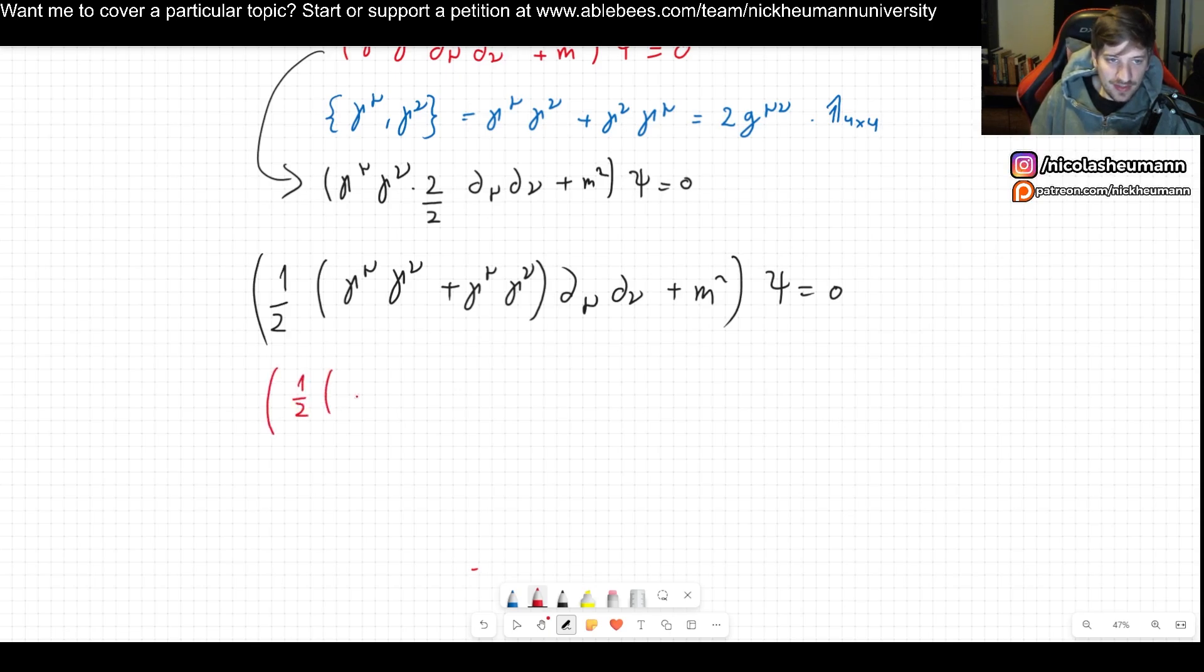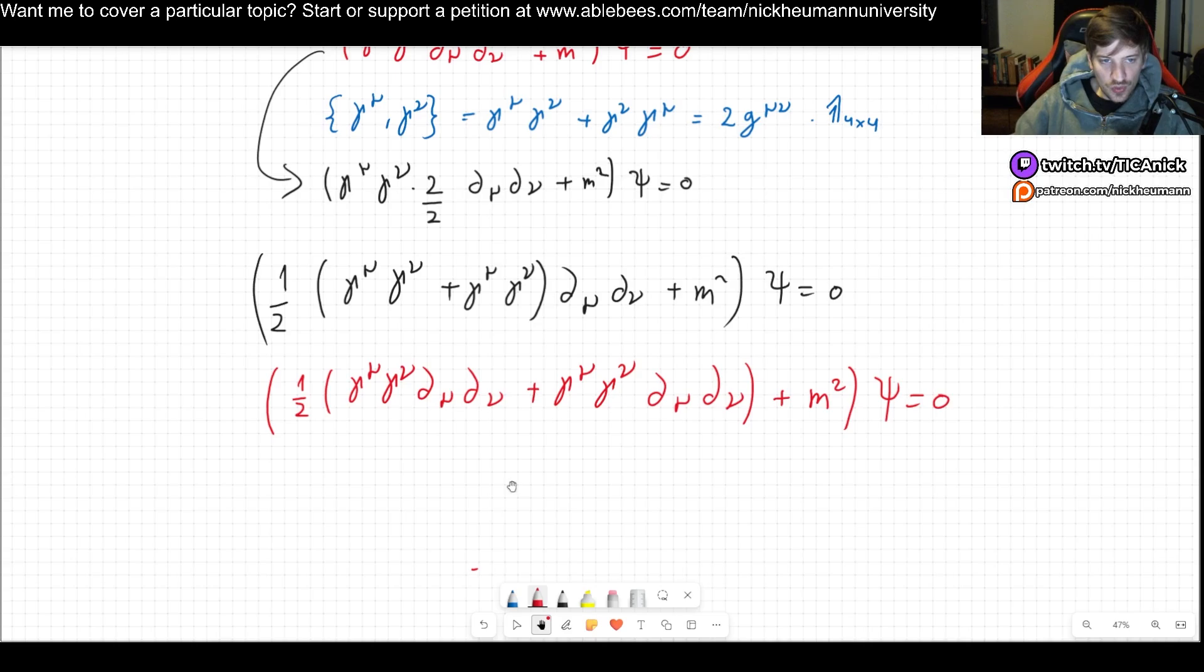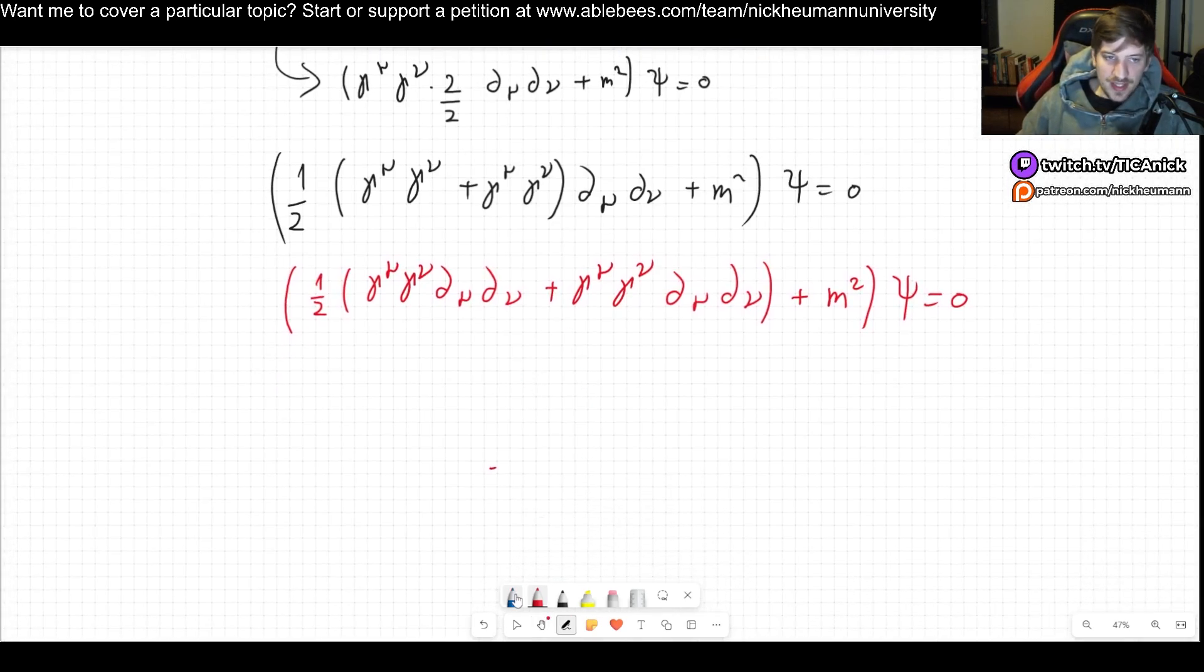So one half gamma mu gamma nu del mu del nu plus gamma mu gamma mu del mu del nu and then we have plus m squared times psi equals zero.